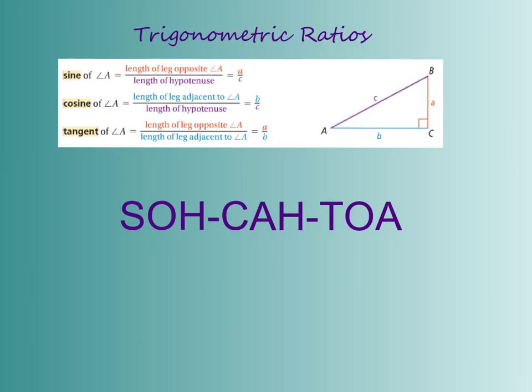First we're going to look at these three trigonometric ratios: sine, cosine, and tangent. These can be defined by the definitions written right next to them. These only exist if we have a right triangle, because we have to be able to identify where our hypotenuse is, which only exists in a right triangle.